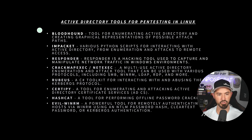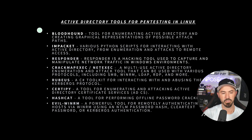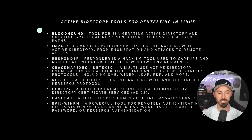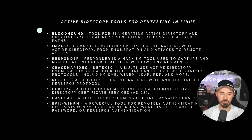The next one — I'm not sure how to pronounce it, Rubeus or Robus — is a C# toolkit for interacting with and abusing the Kerberos protocol. We can abuse that in AD with this tool. The next one, I think it's Certipy, is a tool to enumerate and attack Active Directory certificates — we'll use this to attack ADCS, which is Active Directory Certificate Services. Then we have Hashcat, a tool to perform offline password attacks. And the last Linux tool is Evil-WinRM, a cool tool for remotely getting into a machine via WinRM using an NTLM password hash, clear text password, or Kerberos authentication.